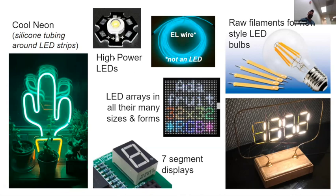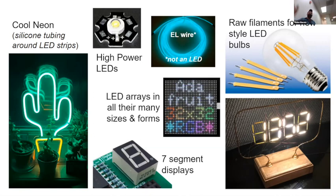High power LEDs are the kind that go into flashlights — if you have a new Mag-Lite, that's what's at its core. Arrays are those NeoPixel strips laid out in a grid. I've seen cool things where people buy these and have a moving display of pixelated Sonic the Hedgehog standing there tapping his toe — you can put it on a bookshelf and get just the right number of pixels for those pixelated characters from the nineties.